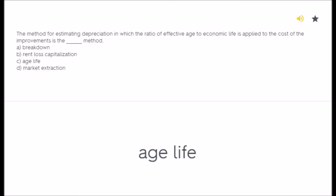The method for estimating depreciation in which the ratio of effective age to economic life is applied to the cost of the improvements is the blank method. A) Breakdown, B) Rent loss capitalization, C) Age-life, D) Market extraction. Answer: age-life.